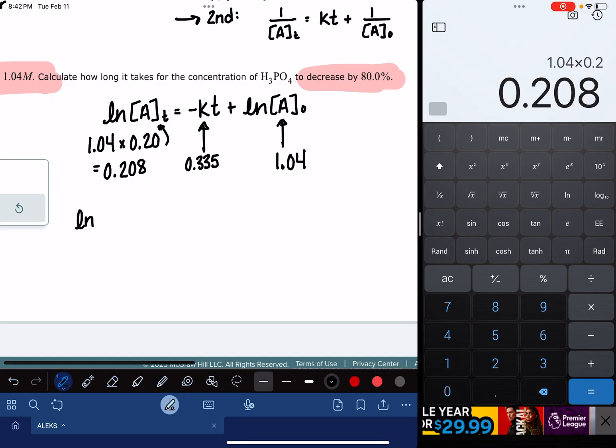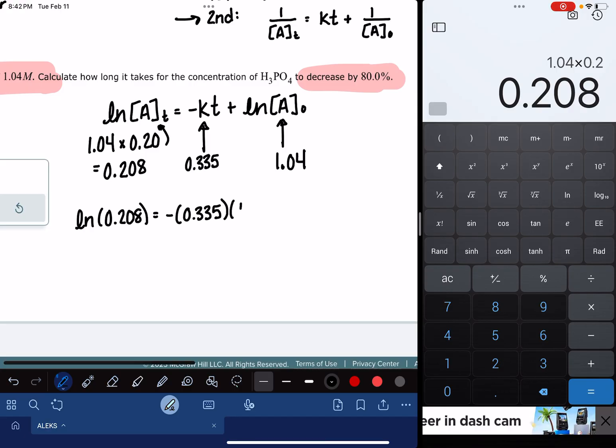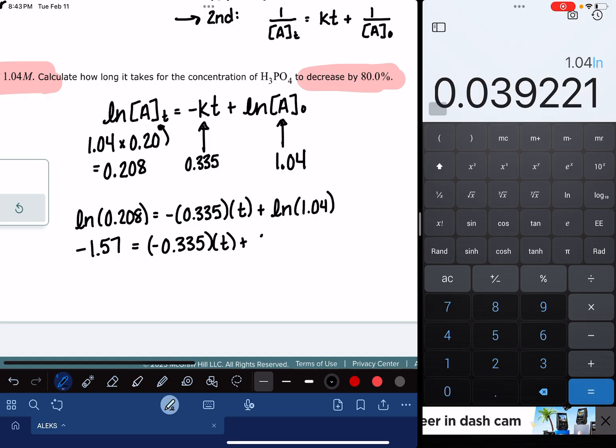And so I'm just going to start plugging stuff in. The natural log of 0.208 is equal to negative k, which is 0.335, that's my k, yours might be different, times the time, which is what our variable is that we're trying to solve for, plus the natural log of 1.04. And then I'm going to go ahead and just solve those natural logs. The natural log of 0.208, negative 1.57 is equal to negative 0.335 times t, plus the natural log of 1.04, which is 0.0392.